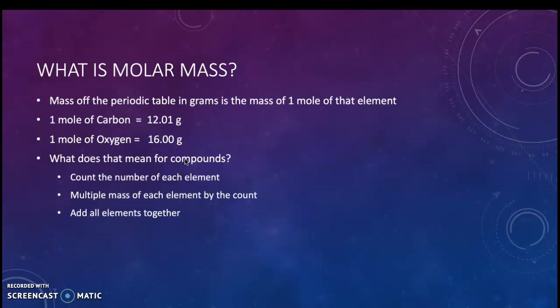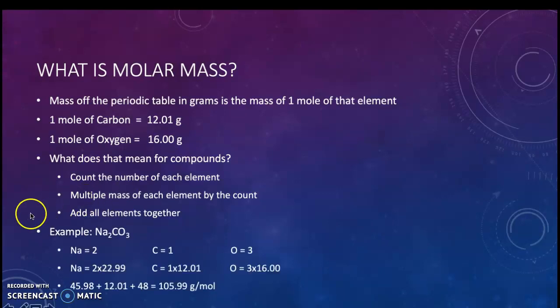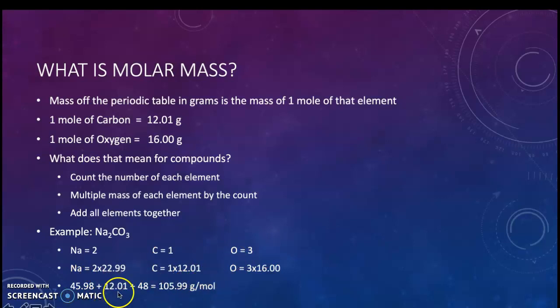So what does this mean for compounds? If we have a compound, we have the chemical formula. We count the number of each element — for H2O, I have two hydrogens and one oxygen. I multiply the mass of each element by the count, then add it all together. For example, Na2CO3: I have two Na's, one C, and three O's. I find these masses off the periodic table, multiply, and add them together. The molar mass of Na2CO3 is 105.99 grams per mole — and it's really important to mark those units as grams per mole.